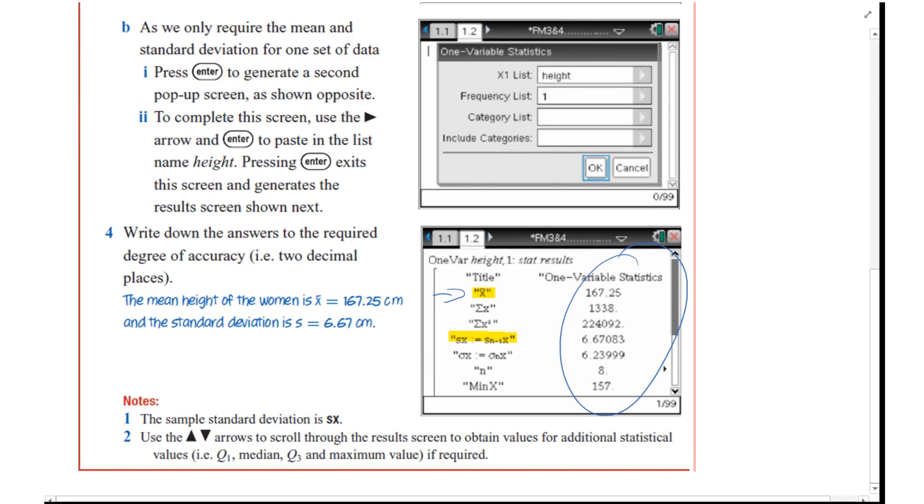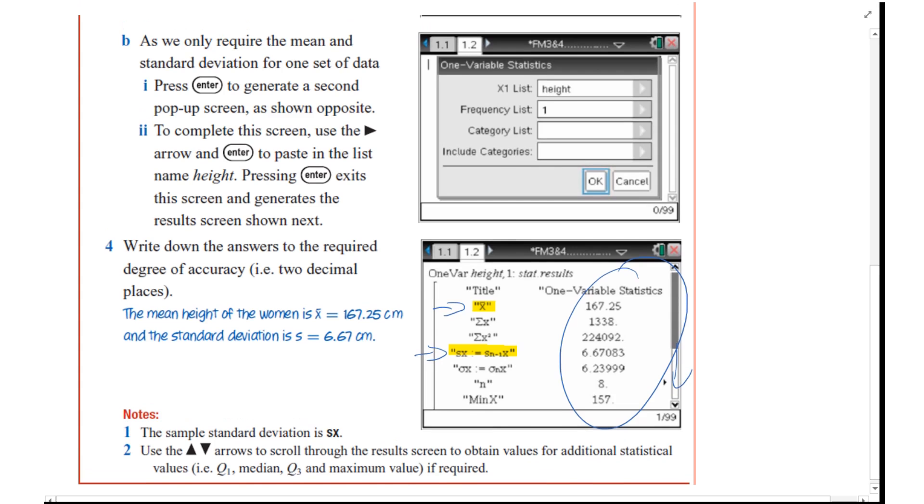This is just to give you a hint. This is also where you get your five figure summary stuff, because you can scroll down here. But that's how you get your mean and standard deviation. In terms of what we're looking at here, those are the two things we want.